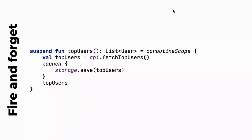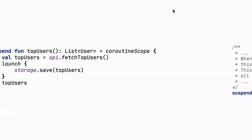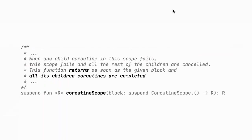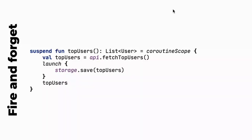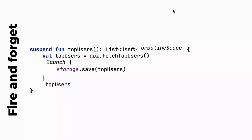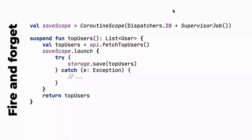For example, launch is often used for fire-and-forget tasks. Say we fetch the top user and want to save to the database while showing the user, without waiting for the save to complete. We use launch inside a coroutineScope. But looking at the coroutineScope documentation, it says the function returns only when all its children coroutines are completed — so this launch is useless here because the suspending function doesn't return until launch finishes. If we really want fire-and-forget, we need to use a different scope.